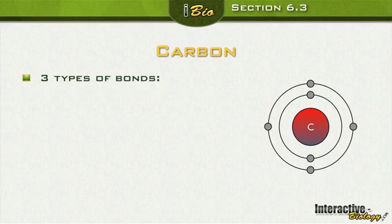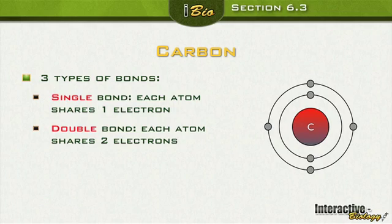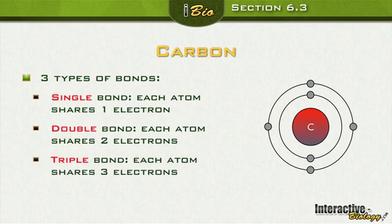There are three types of bonds you get with carbon. The first is a single bond, where each atom is sharing one electron. The next is a double bond, where each atom is sharing two electrons. And lastly, a triple bond, where each atom is sharing three electrons.